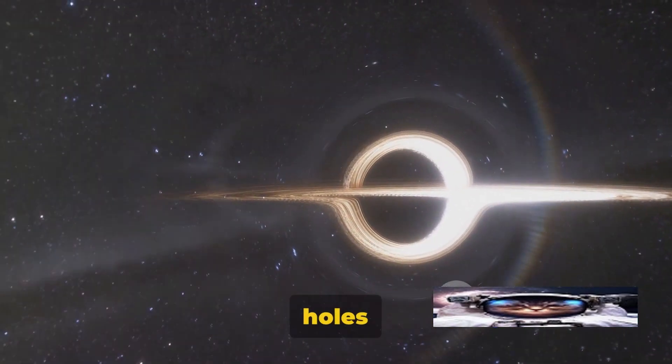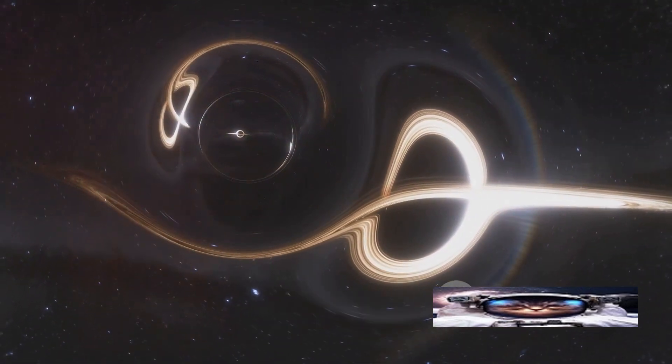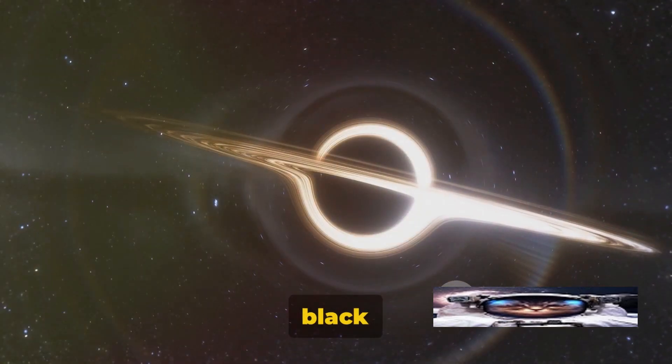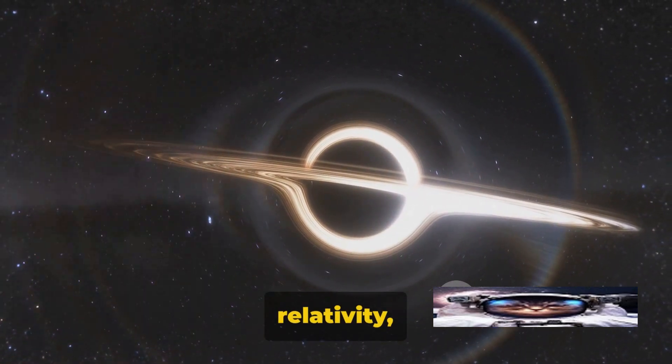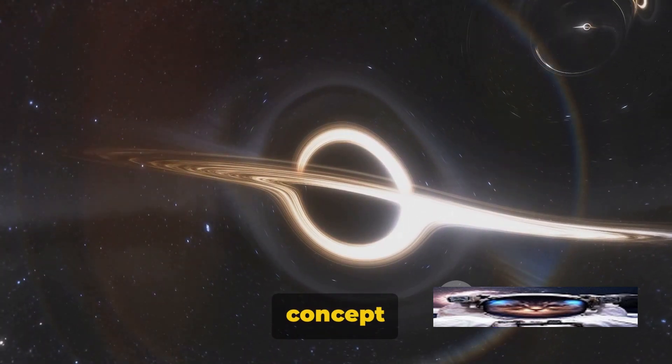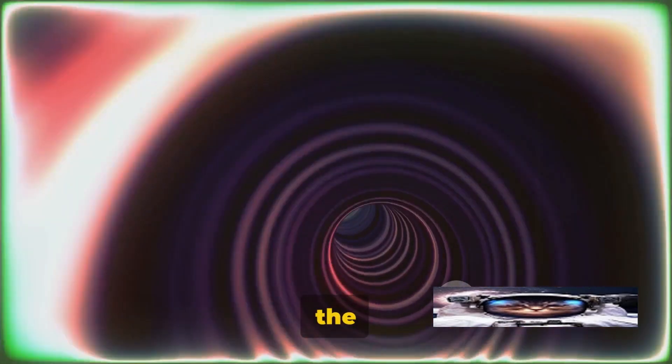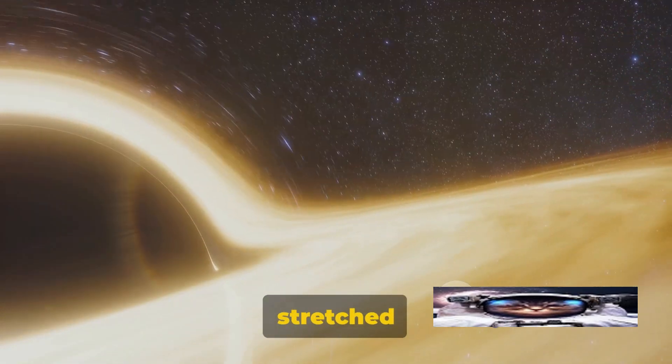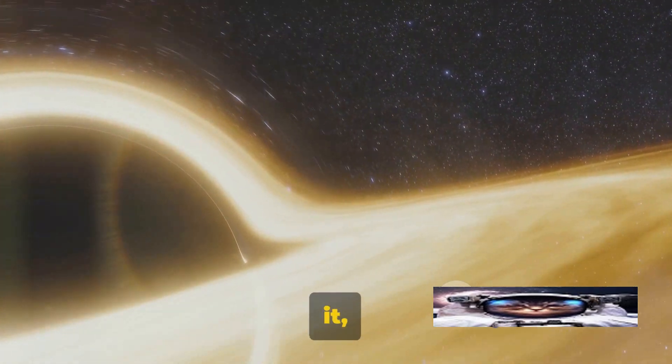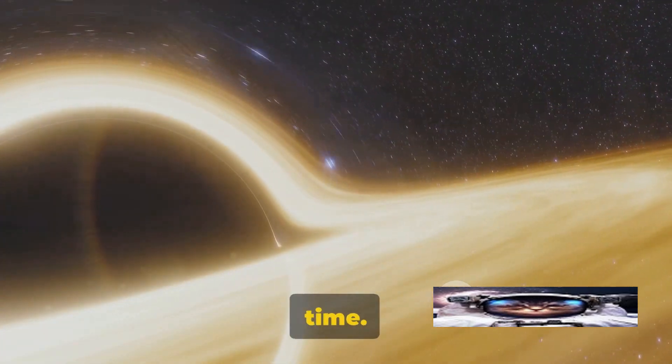The concept of black holes was born in the brilliant mind of Albert Einstein through his theory of general relativity. To understand black holes, we must first take a brief detour to Einstein's theory of general relativity, a revolutionary concept that reshaped our understanding of gravity. Einstein proposed that what we perceive as the force of gravity is actually the bending of space and time by mass and energy. Imagine a fabric sheet stretched tight, place a hefty ball on it, and it will create a dip. That's essentially what mass does to the fabric of space and time.